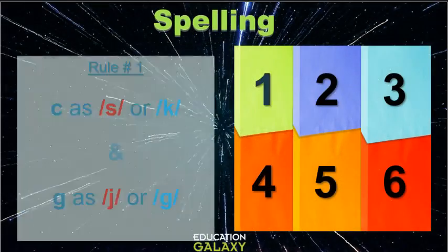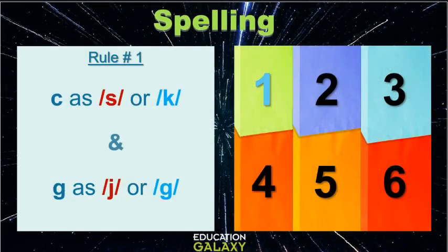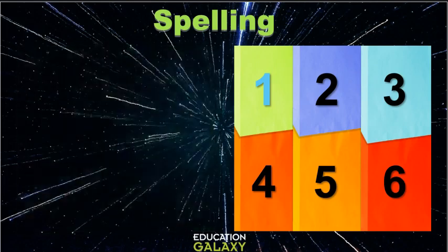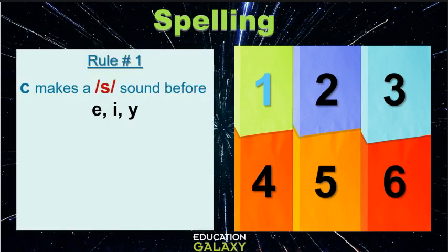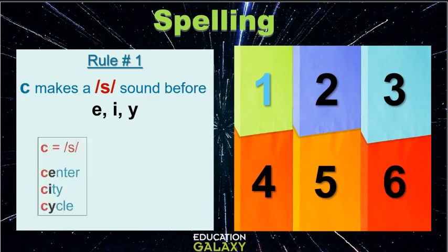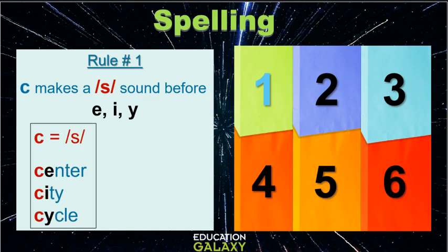Rule number one. This rule tells us when the letter C makes an S or a K sound and when the letter G makes a J or a G sound. So let's start with the letter C. C makes an S sound before E, I or Y such as center, city and cycle.